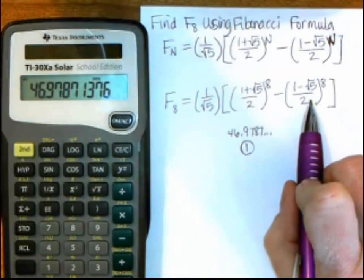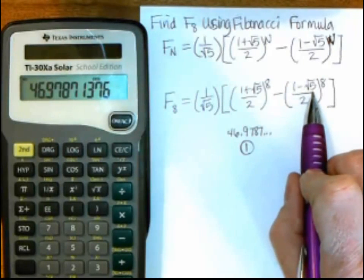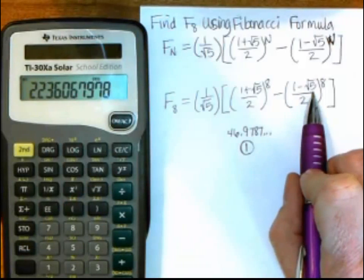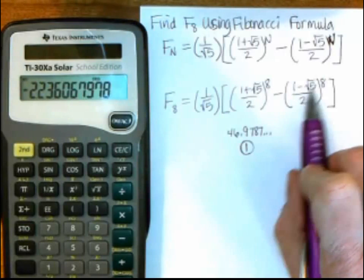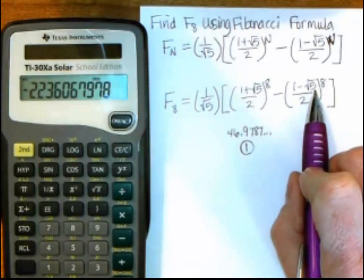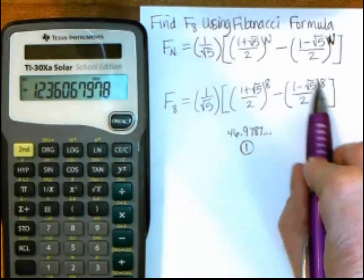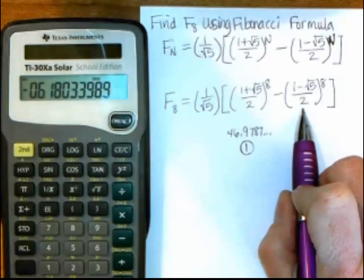Now I want to start over on this one. I have to take the square root and then change its sign. So let's do the square root first. So I do 5, take the square root, and then I want to change its sign to a negative, so I push this plus slash minus button. That changes the sign on the square root of 5. So now it's a negative square root, and then I'm just adding 1. So plus 1 equals, now I have my whole numerator, and then I need to divide by 2, equals.